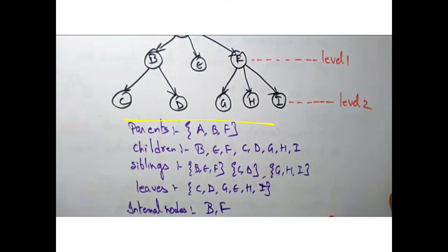G, H, I are the siblings. E is the node. This is about the tree structure.